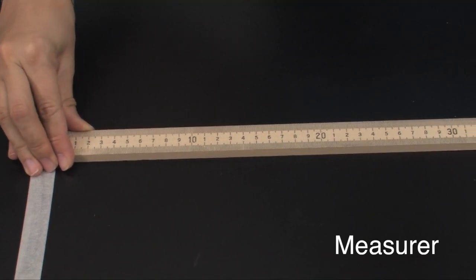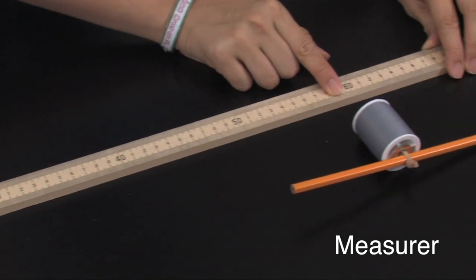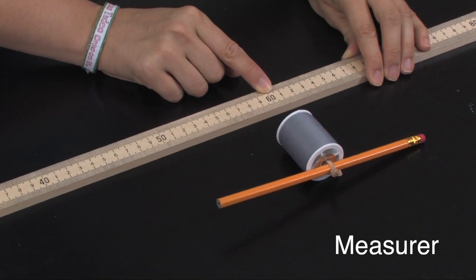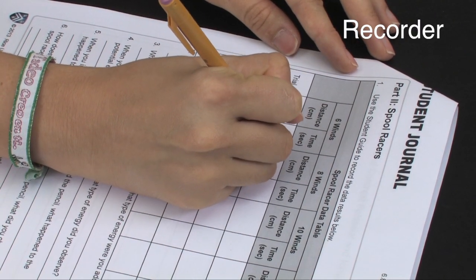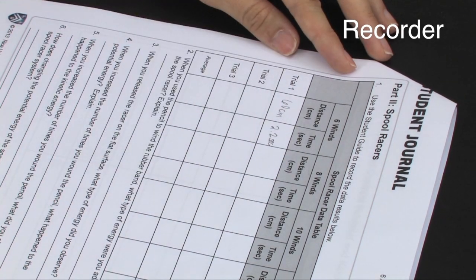The Measurer measures the distance between the starting line and the place where the spool racer stopped moving. The Recorder writes the data in the student journal so that all group members can exchange results at the end of the activity.